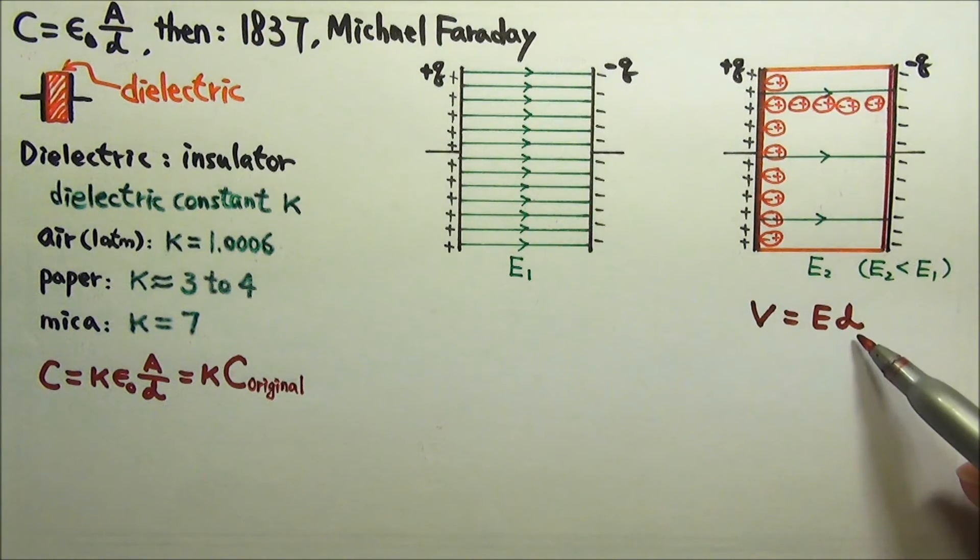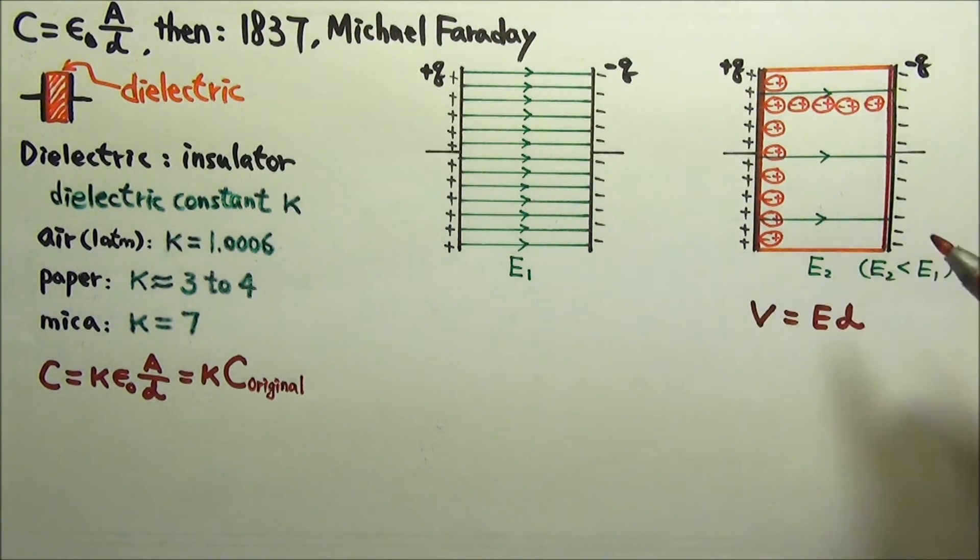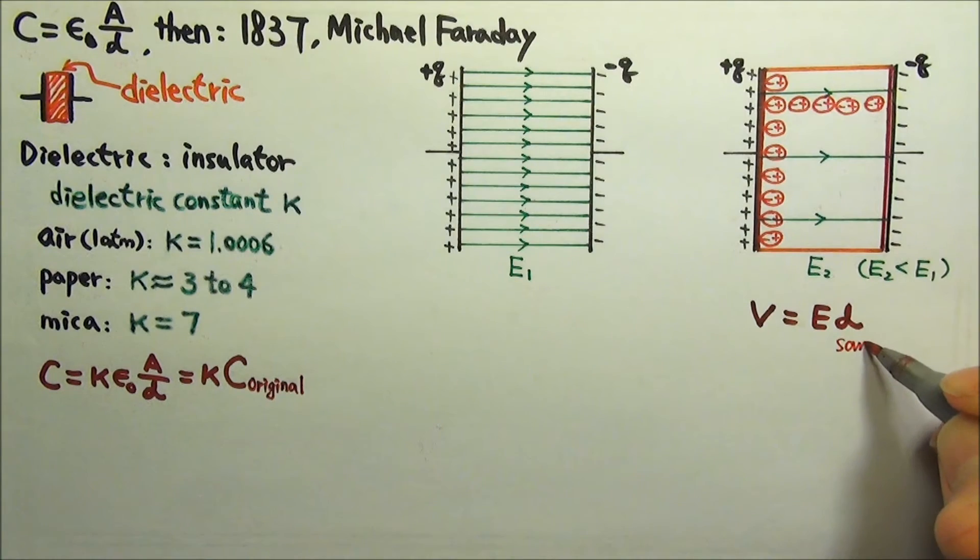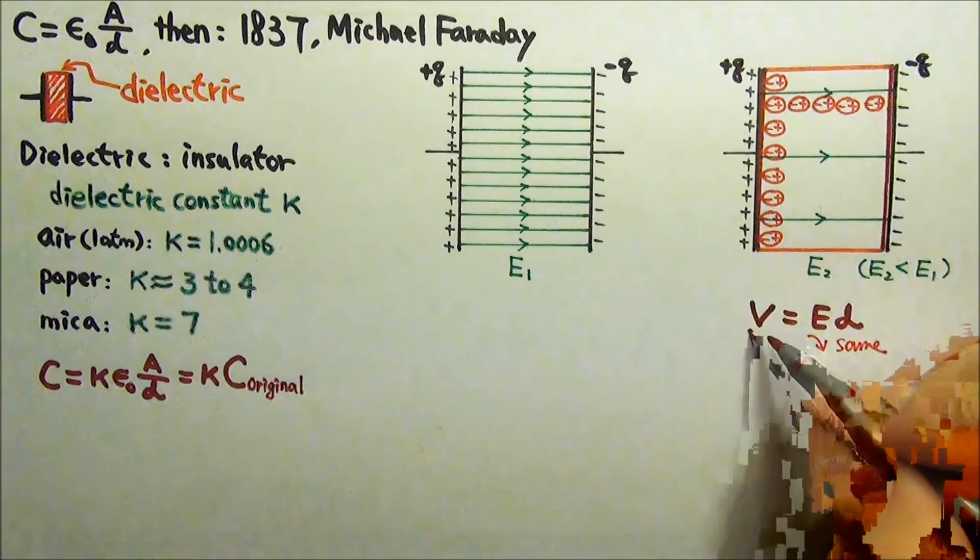Since V equals to ED, and both sets have the same plate separation, and the second set has a smaller E, therefore a smaller voltage.